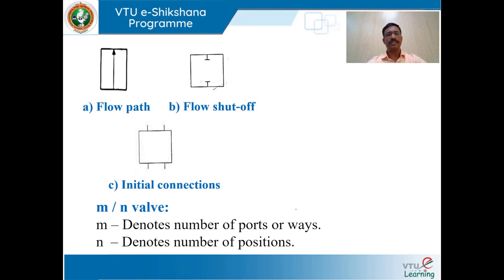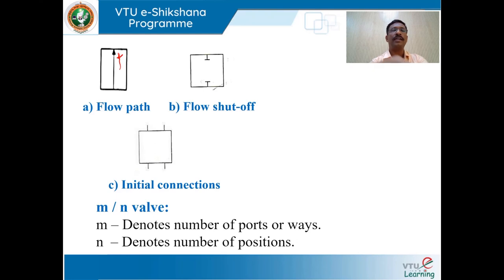In this slide, figure A shows a flow path — a square with a line and arrowhead indicating the direction of flow. In figure B, a symbol within the square indicates flow shutoff.